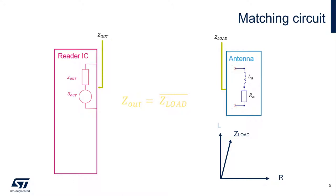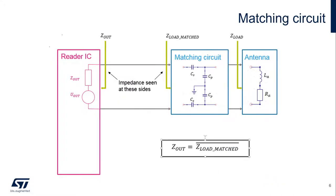So the first question is: why do we need a matching circuit? Essentially, the matching circuit matches the output impedance of the reader, which is mostly resistive, to the antenna, which is primarily inductive. If we look at a vector diagram of the antenna, we would see a very large inductive component and a very small resistive element. The ultimate goal is to try to make Zout equal Zload. Because the antenna is mostly inductive, we have to add capacitance to counter the inductive component, in the form of a series and parallel capacitance. However, additional components also affect the values that we place here.